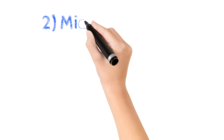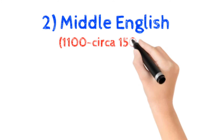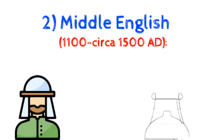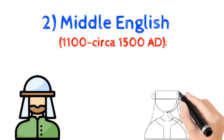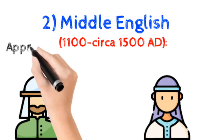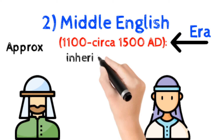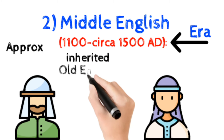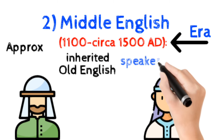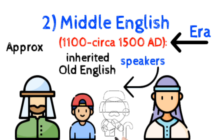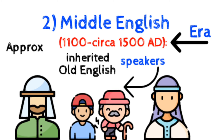Number 2: Middle English, approximately 1100 AD to 1500 AD — that was the Middle English era. The word 'circa' means approximately. Middle English was inherited from Old English, meaning the speakers of Middle English were the sons of Old English speakers.